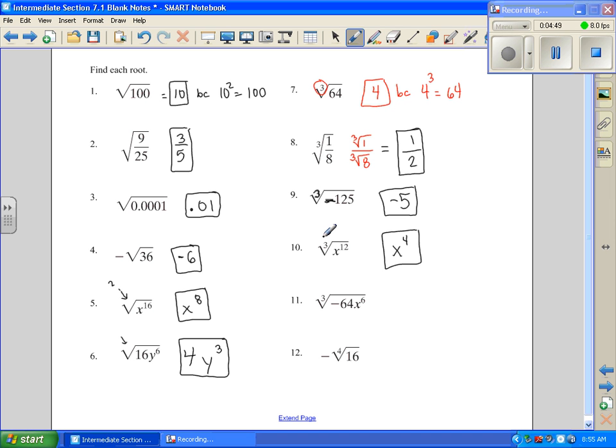Number 11. Let's work with our negative 64 first. We're going to say negative 4 times negative 4 times negative 4 is negative 64. And then with my variables, I'm going to divide 6, x divided by 3 is x squared.